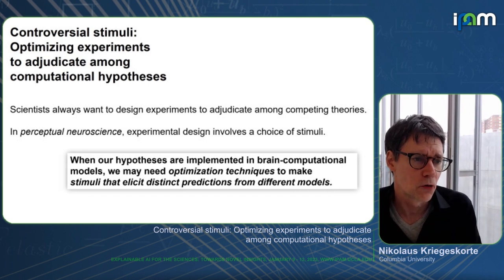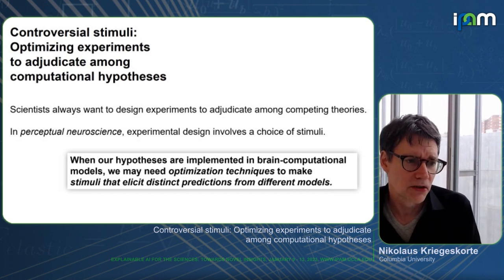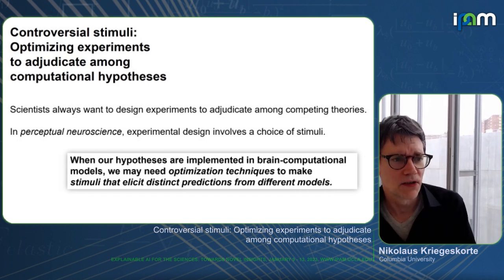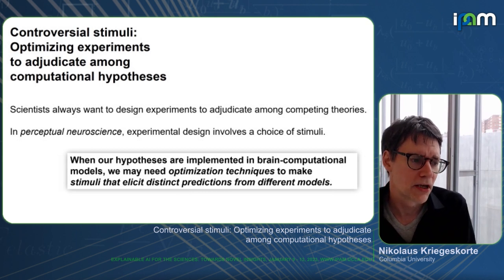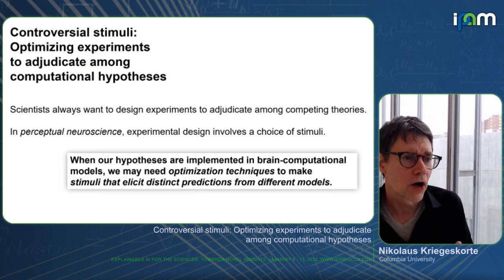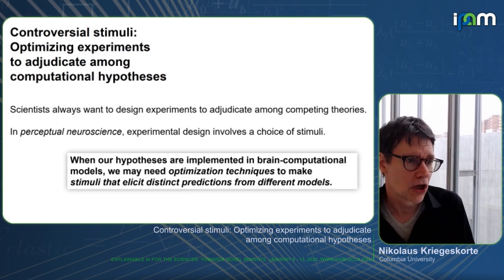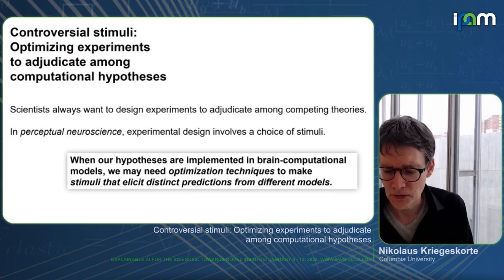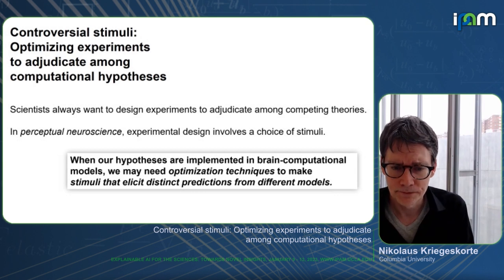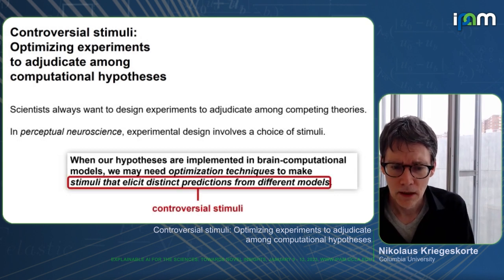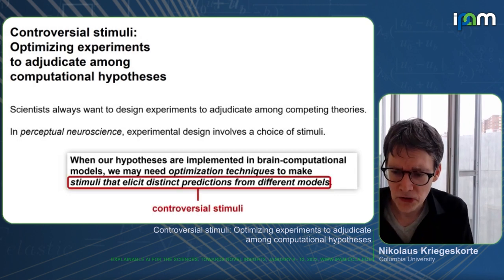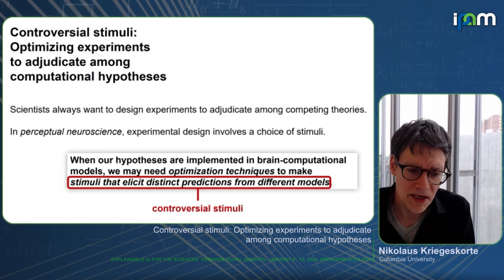This is in contrast to an older tradition of perception science where theories were defined at a verbal level and we could simply come up with stimuli obviously well-suited for adjudicating among them. Now that our theories are implemented in really complex neural network models, it's no longer obvious what our stimuli should look like to give us power to adjudicate between these models with our data. This is where controversial stimuli come in.